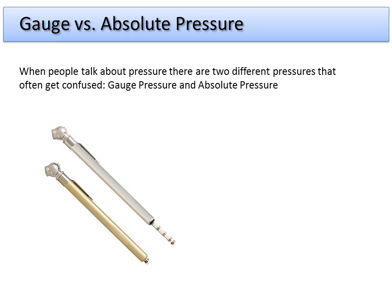Gauges are calibrated to read zero pressure when the actual pressure is really one atmosphere. So there's always the question of what's the absolute pressure relative to the gauge pressure. It's a simple relationship: whatever your gauge pressure is, you add to it the actual atmospheric pressure to get the absolute pressure.